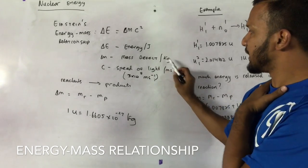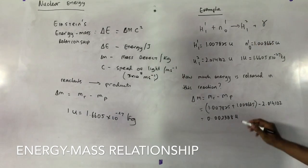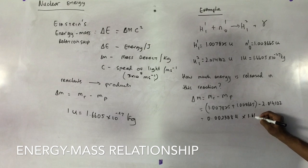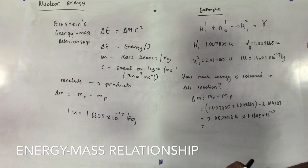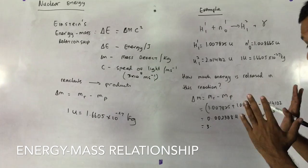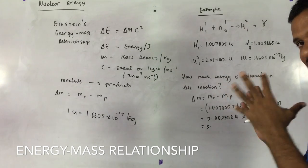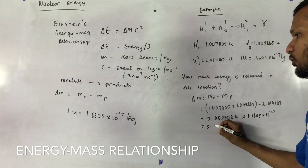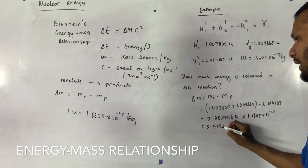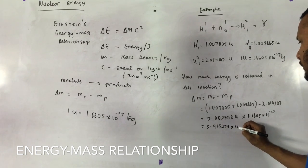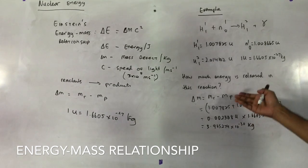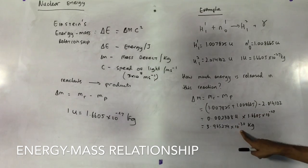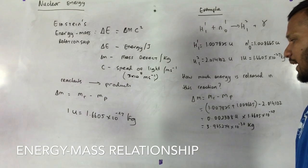So we multiply by 1.6605 by 10 to the minus 27, which will give us a value of, try to be exact as possible because the energies are very very small. 3.965274 by 10 to the minus 30 kilograms. There's no need to write this down really, because you could go from this step to this step in the calculator straight to get the answer.